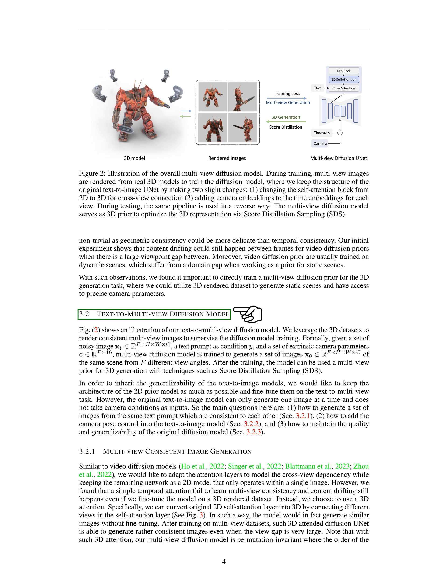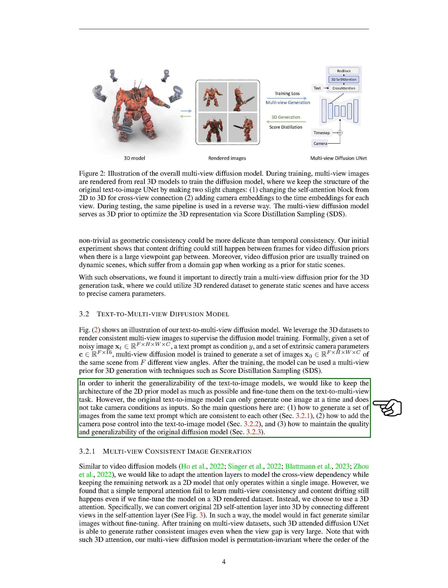Our text-to-multi-view diffusion model uses 3D datasets to create multiple consistent images from different viewpoints. We start with a set of noisy images, a text prompt, and some camera parameters. The model then uses these inputs to generate a series of images of the same scene from different angles. Once trained, this model can be used to generate 3D images using techniques like score distillation sampling (SDS). We aim to retain the generalizability of text-to-image models, so we try to keep the architecture of the 2D model as intact as possible while fine-tuning it for the text-to-multi-view task. However, the original text-to-image model can only generate one image at a time and doesn't consider camera conditions.